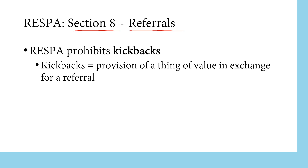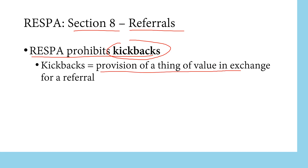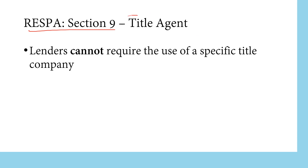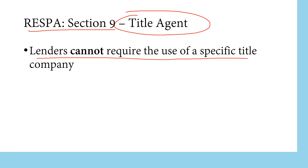Section 8 of RESPA prohibits kickbacks — basically the provision of a thing of value in exchange for a referral. Section 9 of RESPA has to do with the title agent or the title company; lenders cannot require the use of a specific title company as per RESPA.